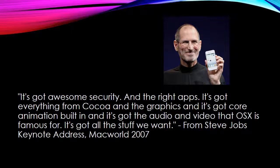My next example is a quote from Steve Jobs: it's got awesome security and the right apps, it's got everything from Cocoa and the graphics, and it's got Core Animation built in, and it's got the audio and video that OS X is famous for, it's got all the stuff we want. This quote came from an address that Steve Jobs gave to the press about a new Apple technology. His repeated use of the word and lists off and emphasizes the characteristics of this technology, stressing the innovation of it all.